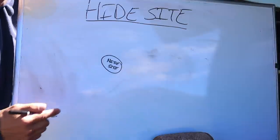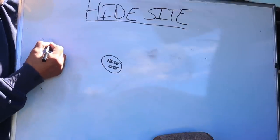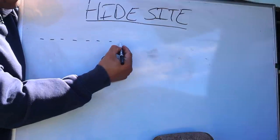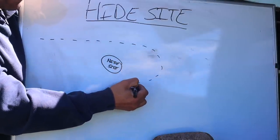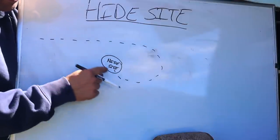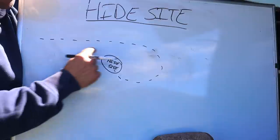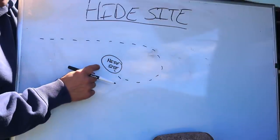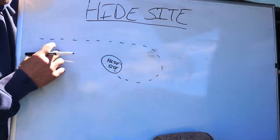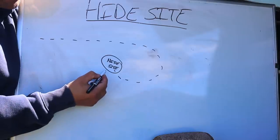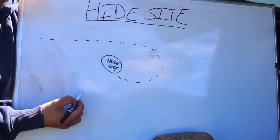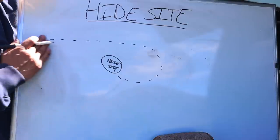There are a couple of ways we can do movement into our hide sight. The first one is called the hook. We move in a straight line past our hide sight and then hook back around into our hide sight to occupy. What this does is create a path to one side of our hide sight. We hook around, and this gives us the opportunity to observe that path if we are being pursued — to determine that enemy personnel are following our trail — and before they get into our hide sight and find us, we can use one of our escape routes to get away from that enemy pursuer.